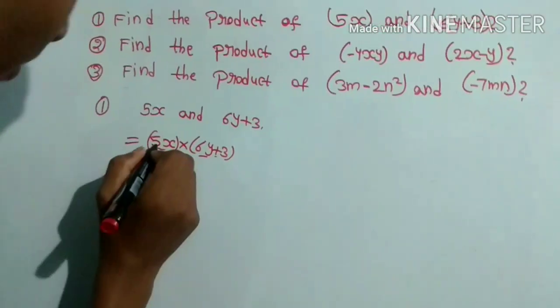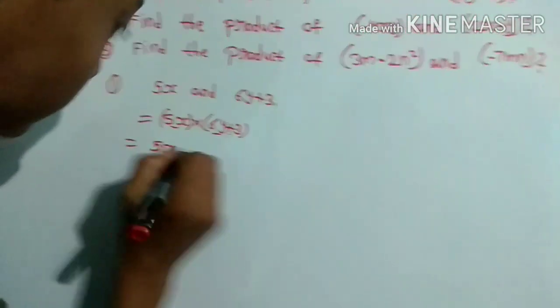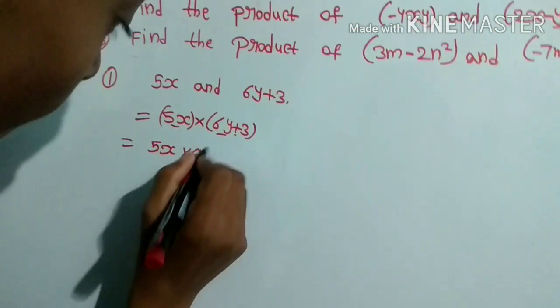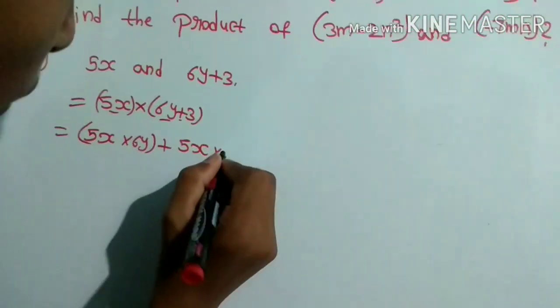We will multiply 5x by 6y and then multiply by 3. 5x into 6y plus 5x into 3.